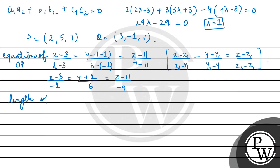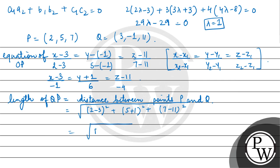Now, length of perpendicular QP will be the distance between points P and Q, which is equal to using the coordinates of P and Q: √[(2 - 3)² + (5 - (-1))² + (7 - 11)²], which comes out to be √[1² + 6² + 4²] = √[1 + 36 + 16] = √53. So length of perpendicular PQ is √53.